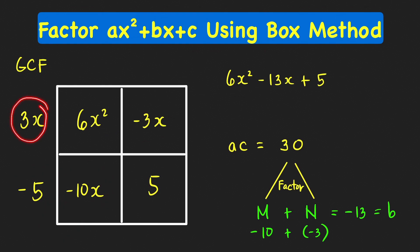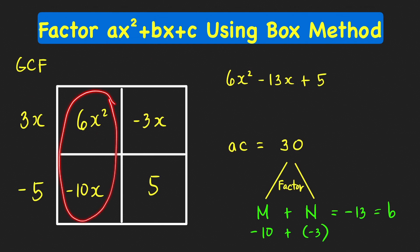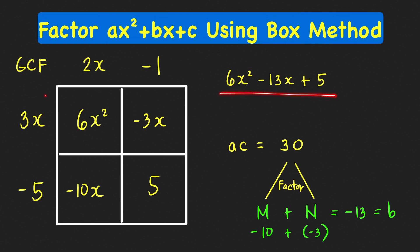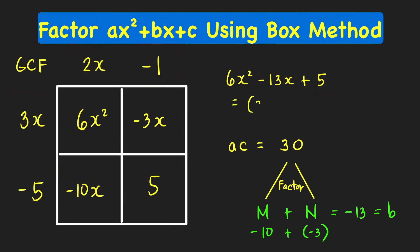Instead of writing negative 3x, we write positive 3x because the sign of that position is positive. The greatest common factor of the first column is 2x, and it should be positive because that term is positive. The GCF of the second column is 1, but we follow the sign of that term, so we write negative 1. From here we can determine the factors: 3x minus 5 and 2x minus 1. Therefore, this trinomial equals the quantity 3x minus 5 times the quantity 2x minus 1.